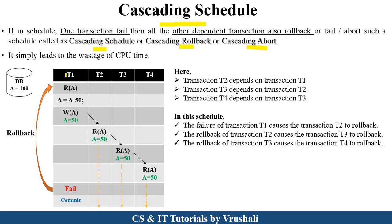In this particular schedule there are four transactions: T1, T2, T3, and T4. T1 first reads value A from the database — A equals 100 — then performs the operation A = A minus 50, that is 100 minus 50 equals 50, and writes A equal to 50 into the buffer memory. T2 is dependent on T1; it reads A equal to 50 written by T1. T4 reads the value written by T3, that is A equal to 50. So T2 depends on T1, T3 depends on T2, and T4 depends on T3.